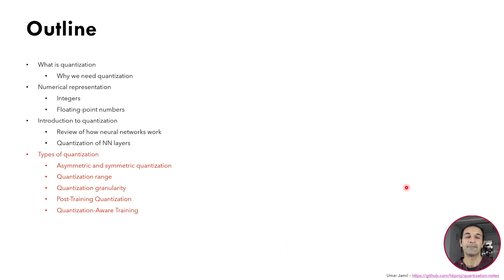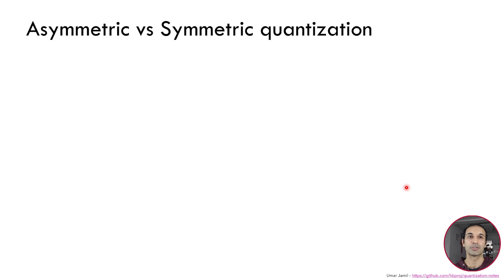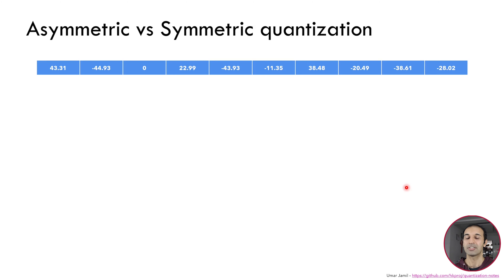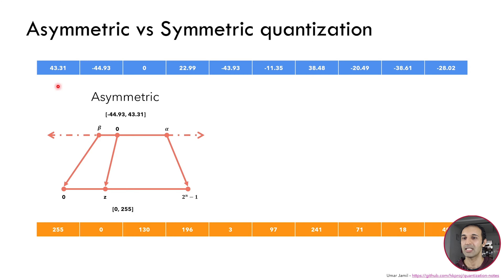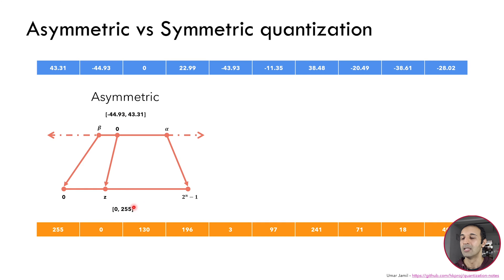Let's go into the details of quantization by reviewing the types available. First I will show the difference between asymmetric and symmetric quantization. Imagine we have a tensor of 10 values. The goal of asymmetric quantization is to map the original tensor — distributed between minus 44.93 (the smallest number) and 43.31 (the biggest number) — into another range made up of integers between 0 and 255, which are the integers representable using 8 bits. If we do this operation we will obtain a new tensor that maps, for example, the biggest number into 255, the smallest into 0, and another number into 130.